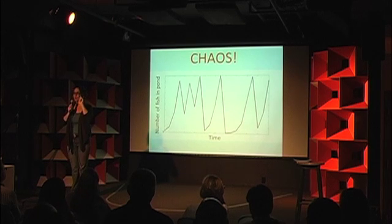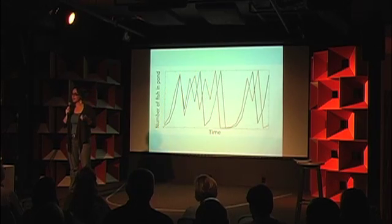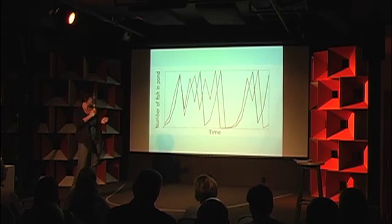We can do that same experiment starting with one more fish than before. That red line is what happens when we start with two fish. If I start with just one more fish in my pond, look at what happens at the very end: with one fish my pond ends up almost full, but with two fish it ends up almost empty. This is what's called the butterfly effect. It was described by meteorologist Edward Lorenz, who said his mathematical model of the atmosphere was so incredibly sensitive that something as small as a butterfly flapping its wings in South America could cause what would otherwise be a clear day in Kansas to be a stormy day with tornadoes — something that small could have a huge impact.